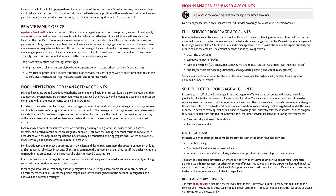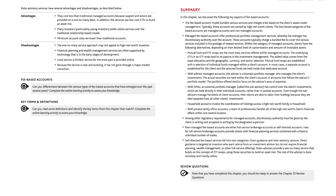The term robo-advisor describes a recent investment model. This one-to-many service builds on the concept of ETF wraps, using those securities to build an asset mix. The key difference is that the role of the advisor is done remotely and mostly online. Robo-advisory services have several advantages: they cost less than traditional managed accounts because support and advice are provided on a one-to-many basis and the services use low-cost ETFs to build an asset mix; many investors, particularly young investors, prefer online services over the traditional relationship-based model; and minimum account sizes are lower than traditional accounts. Disadvantages include: the one-to-many service approach may not appeal to high net worth investors; financial planning and wealth management services are often supported by technology that is in the early stages of development; local service is limited, as service is provided mostly online; and because the service is new and evolving, it has not gone through a major market correction.